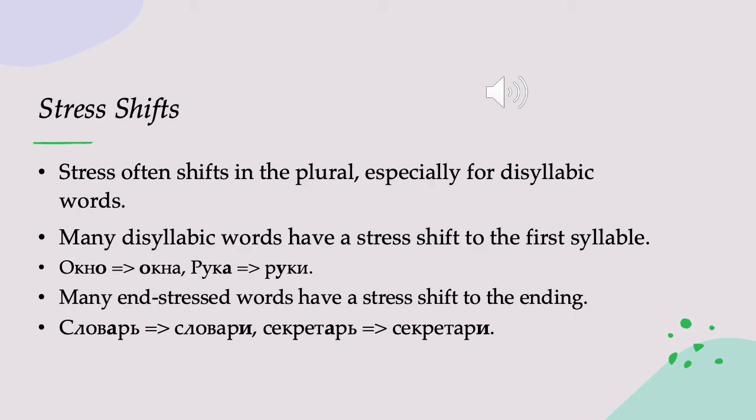In the last slide, I mentioned that sometimes in the nominative plural you get stress shifts. This happens particularly with disyllabic words — words of two syllables. Very often, disyllabic words are stressed on the second syllable in the singular, and then the stress shifts to the first syllable in the plural. So okno, window, becomes okna, windows. Ruka, hand or arm, becomes ruki, hands or arms. This is the most common pattern.